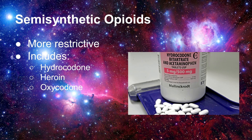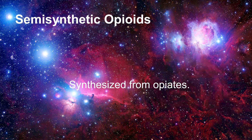The next category, which is more restrictive, is semi-synthetic opioids. Hydrocodone, heroin, and oxycodone are among the substances in this category. A drug is considered a semi-synthetic opioid if it is synthesized from one of the naturally occurring opiates.